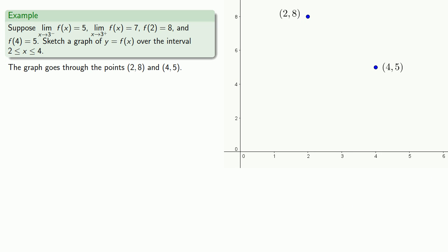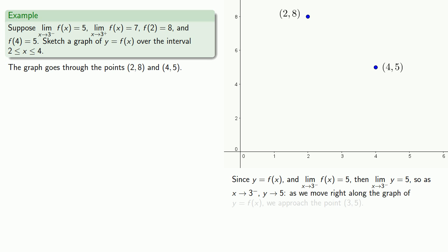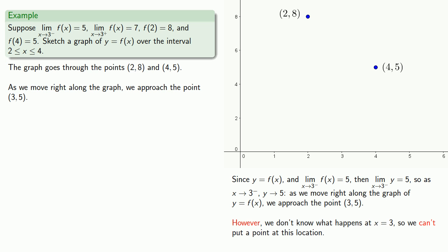Since y equals f of x, the limit as x approaches 3 from below of f of x equals 5 means the limit as x approaches 3 from below of y is equal to 5. We might read this as: as x gets close to 3 from below, y gets close to 5 — so as we move right along the graph, we approach the point (3, 5). There's one important caution: this does not tell us anything about what happens at x equals 3. The value of f of x at x equals a is not relevant to the limit, and the limit tells you nothing about the function value. So we don't actually know what happens at x equals 3 and can't put a point at (3, 5).